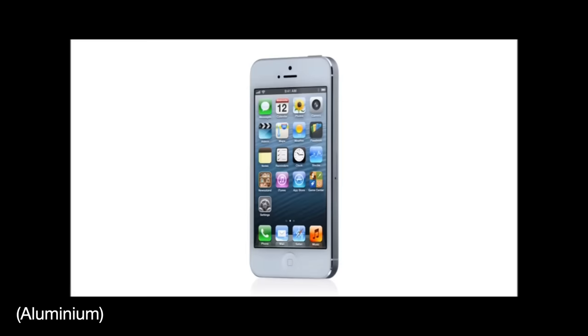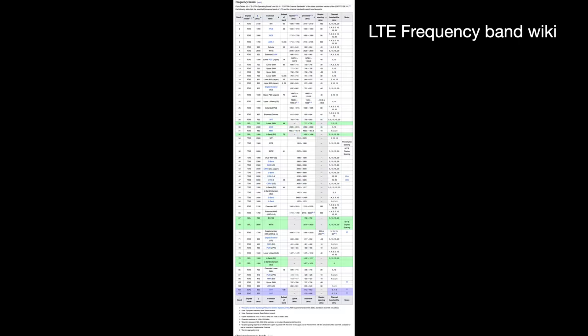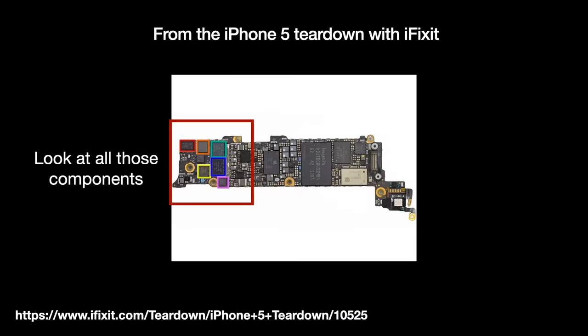LTE covers a staggering 40 frequency bands around the world ranging from 600 MHz to 3600 MHz. So LTE phones must have filters for all those bands — that means a lot of filters and modules. According to the iFixit iPhone 5 teardown, TriQuint slash Corvo duplexers handled stuff for the UMTS band, and an Avago duplexer with an FBAR filter handled LTE.